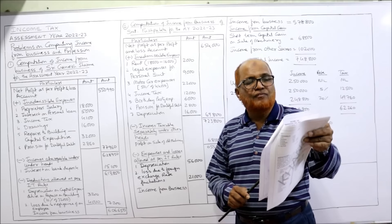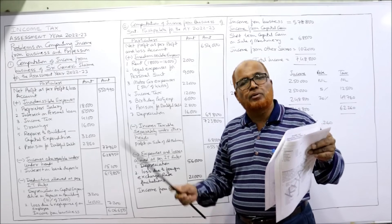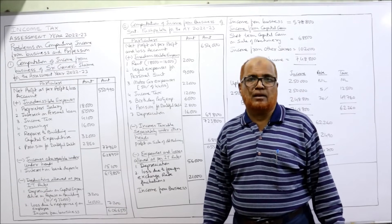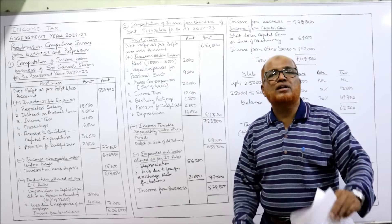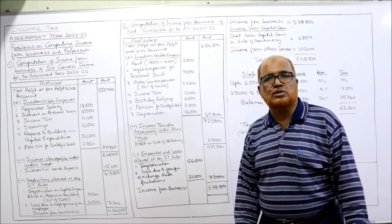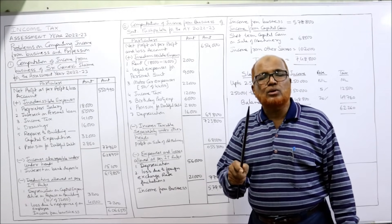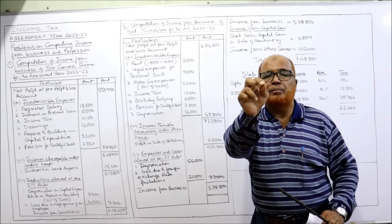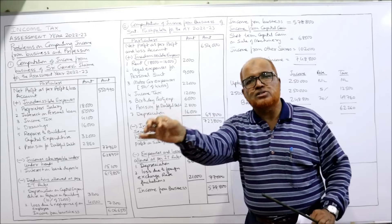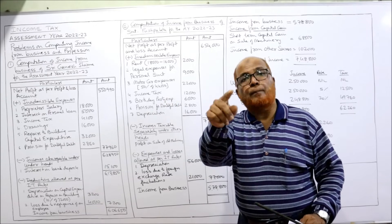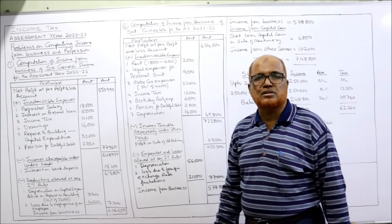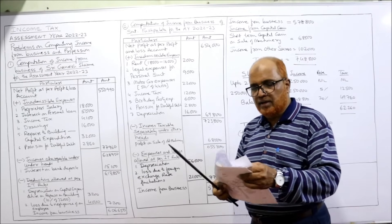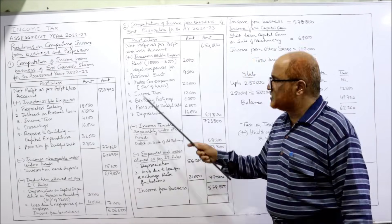Motor car expenses: 50% of the use of the motor car is attributable to business purpose, meaning the car is used 50% for business and 50% for personal. Motor car expenses debited to P&L are 44,000. So 50% of 44,000 = 22,000 is allowed and 22,000 is disallowed. Motor car expenses for personal use — 50% of 44,000 = 22,000 — disallowed. Income tax debited to P&L — disallowed, same as the previous problem.